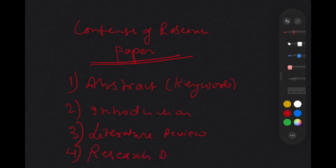Then you go to the important part called research design. Research design includes objectives, methodology, what type of research you are doing, what type of data you are collecting, what sampling method you are taking, and what kind of hypothesis or research questions you are making. All these parts are covered in research design. After completing the research design, the most important part is results and discussions.